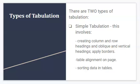We have what is called simple tabulation, and this involves creating column and row headings and oblique and vertical headings, the application of borders, table alignment on the page whether vertically or horizontally or both, and sorting of data in tables. It is important to note that simple tabulation can take place in Microsoft Word or Microsoft Excel through the use of any of these things.